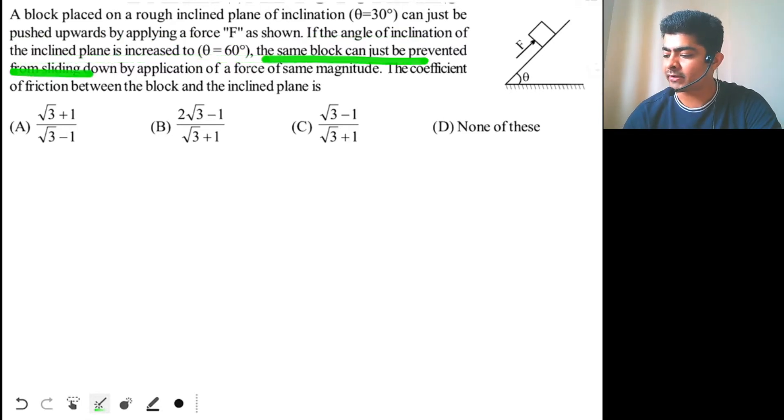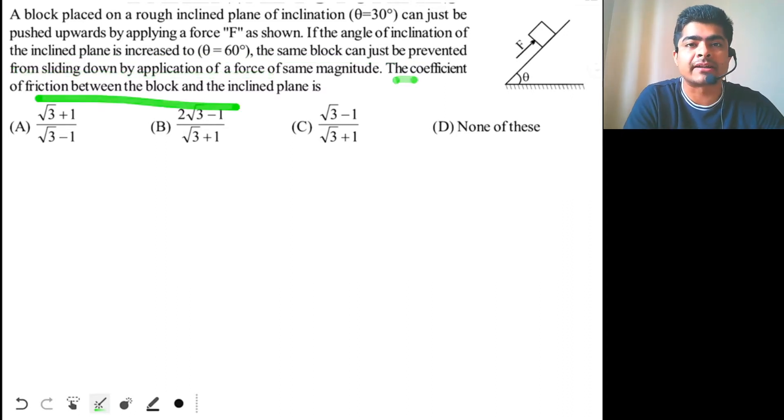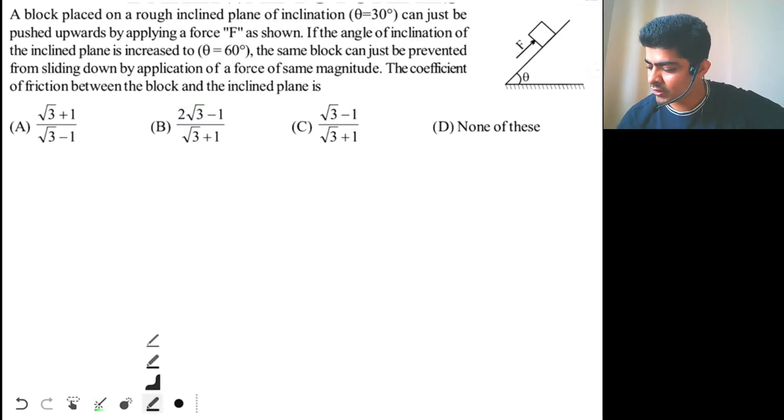the same block can just be prevented from sliding down by application of a force of same magnitude. The coefficient of friction between the block and the incline plane is what? So that's very easy question. In the initial case,